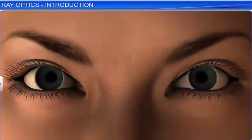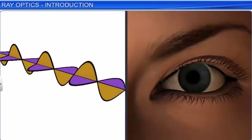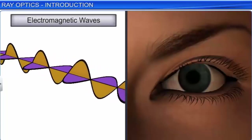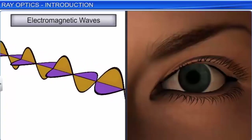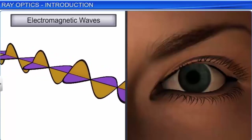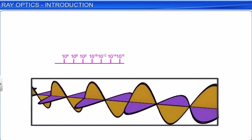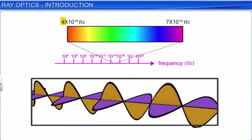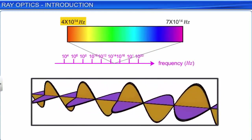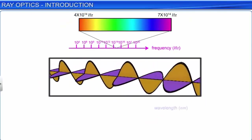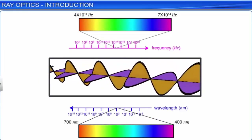In the same way, the human eye is also not sensitive to all frequencies of electromagnetic waves. The electromagnetic waves to which the human eye is sensitive is called visible light. The approximate frequency range of visible light is 4×10¹⁴ Hz to 7×10¹⁴ Hz. In terms of wavelength, the range of visible light is 700 nanometers to 400 nanometers.